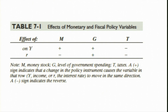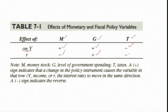This is a summary of the effects of monetary and fiscal policy variables. Starting with money supply: an increase in money supply increases Y but decreases the rate of interest. An increase in government expenditure increases output and also increases the rate of interest. In contrast, an increase in tax reduces output and also reduces the rate of interest.